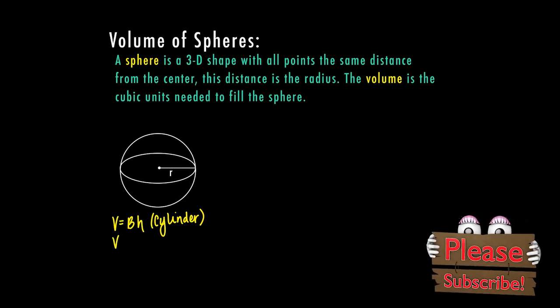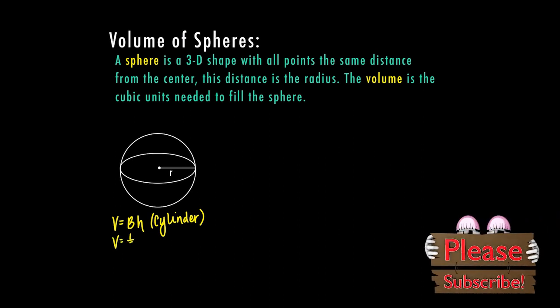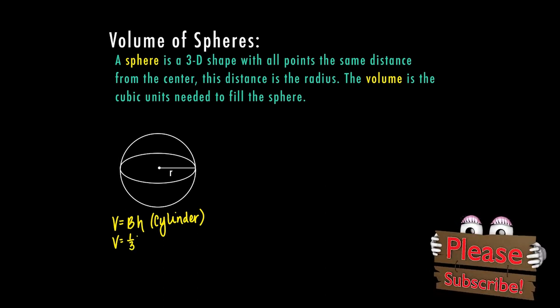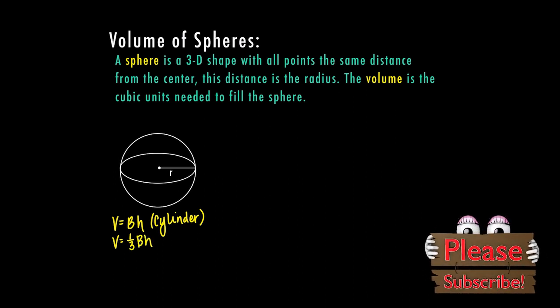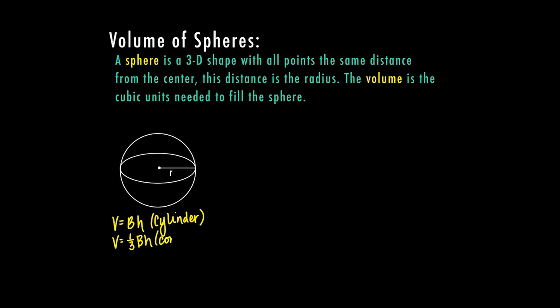Then we did the volume of a cone and the volume of a cone was one-third of that area of the base times the height. So my cone essentially did one-third pi r squared h.